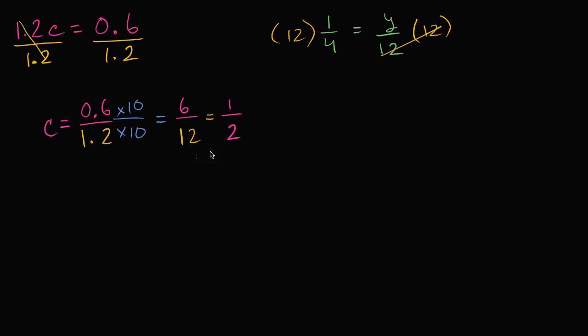So you get 12 over 4. 12 over 4 is equal to y. Or you could say y is equal to 12 over 4. I'm just swapping the sides. Doesn't change what's being said. Y is equal to 12 over 4.